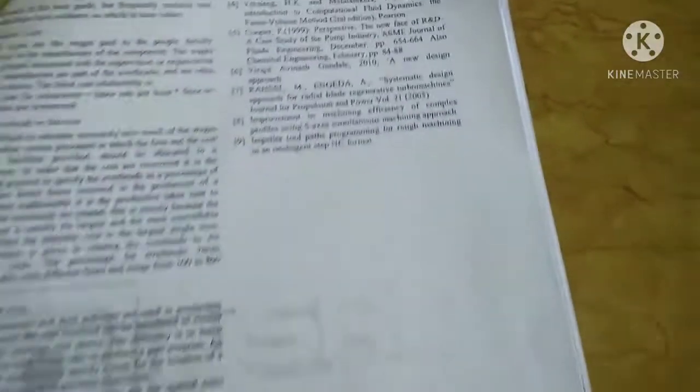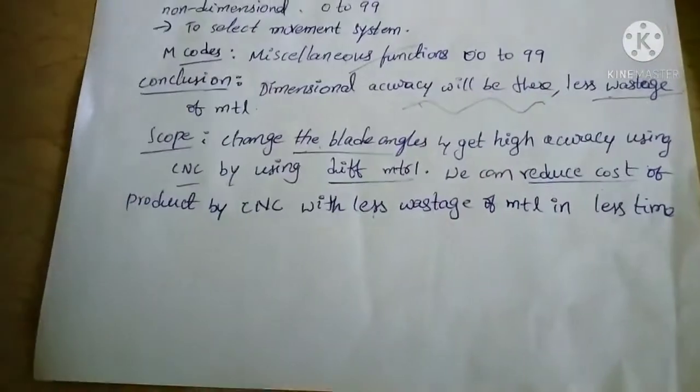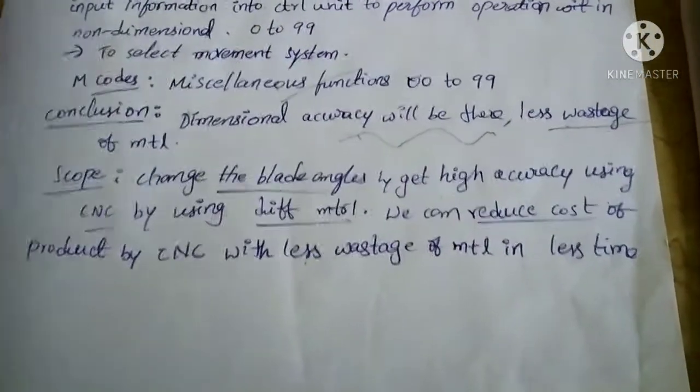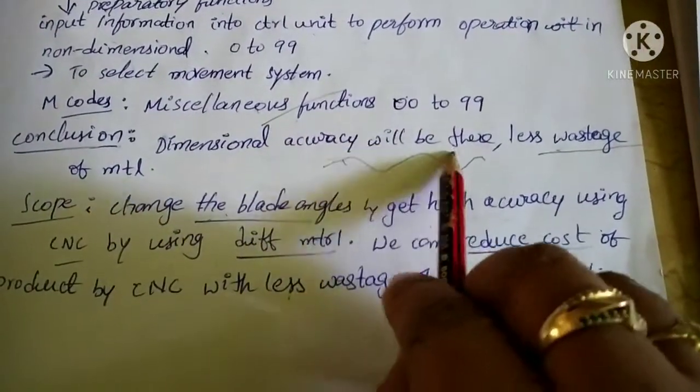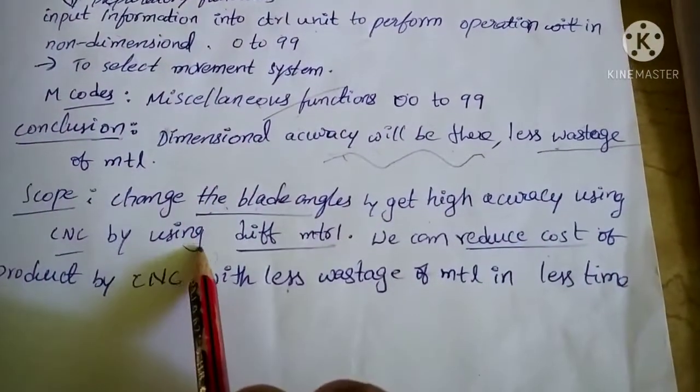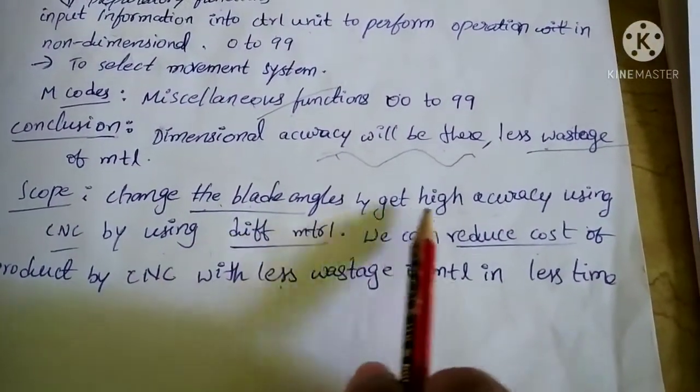Next one is conclusion. In conclusion, we get dimensional accuracy with less wastage of material. Next is future scope: change the blade angles and get high accuracy using CNC.